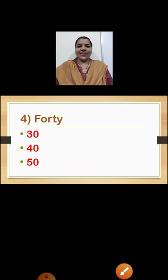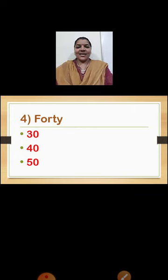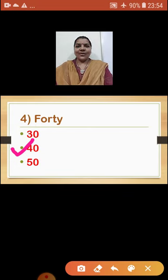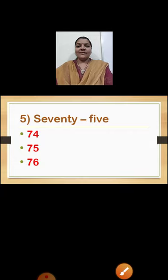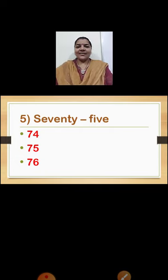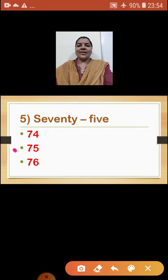Question number 4: The number name is forty. The given options are 30, 40, and 50. In the middle we can see 40, so we will put a tick mark on it. Question 5: The given number name is seventy-five. The given options are 74, 75, and 76. In the middle we can find 75, which is the correct answer.